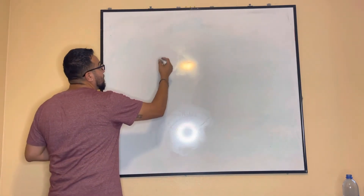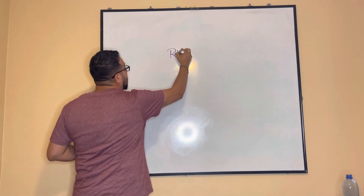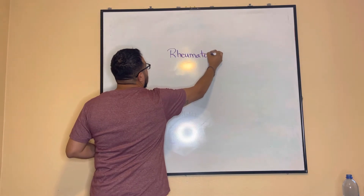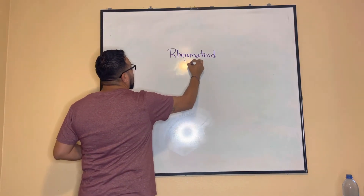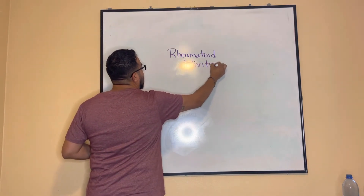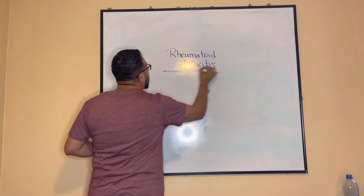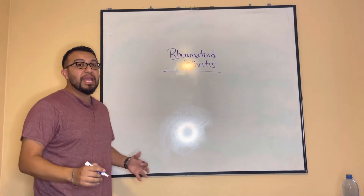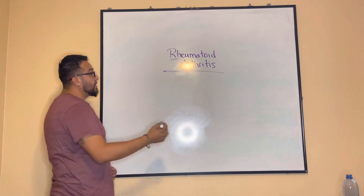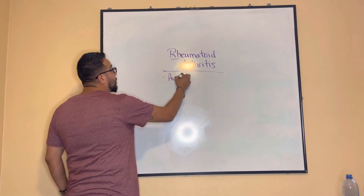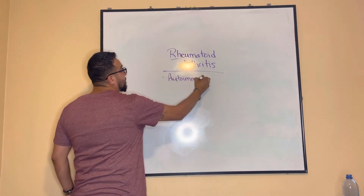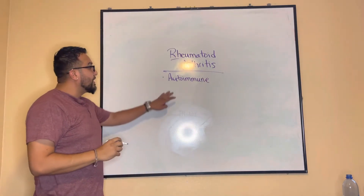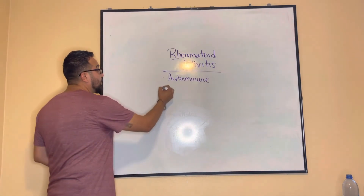The next condition is rheumatoid arthritis, also known as RA. It's imperative to know the etiology. This one is an autoimmune issue, which is very different from osteoarthritis. Rheumatoid arthritis is a systemic inflammatory issue.